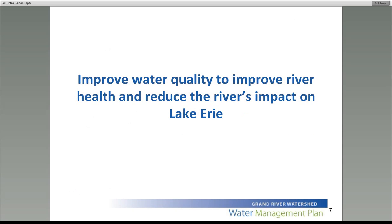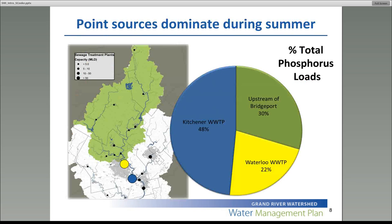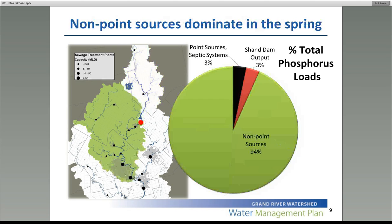Focusing on the second goal — to improve water quality to improve river health and reduce the river's impact on Lake Erie — we really looked at where the sources are for nitrogen and phosphorus. That's the primary water quality issue in the watershed. During the summer, point sources are dominating the water quality issues, with most of the load coming in from point sources through the watershed. However, during the spring after significant rainfall, most, if not all, of the nitrogen and phosphorus is coming from non-point sources — about 94% on a regional basis — with point sources offering only a small contribution during the spring.